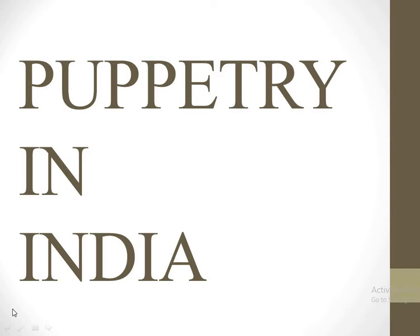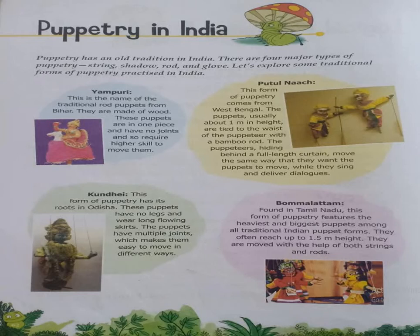We have puppetry in the different regions of India, and this puppetry is different from each of the states. Puppetry is basically of four types: string-based puppetry, rod-based puppetry, shadow puppetry, and glove puppetry. Sometimes we make shadows and use puppetry; if strings are not used then rods are used, and sometimes we make puppets worn on the hands like gloves.